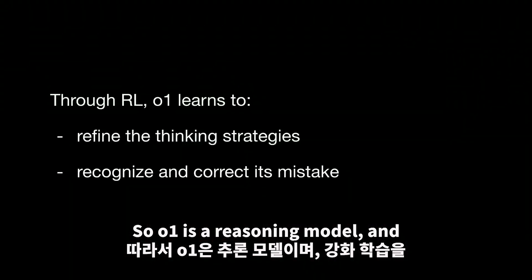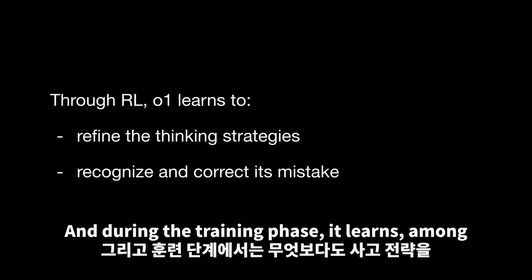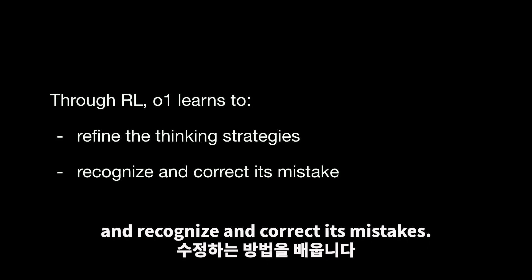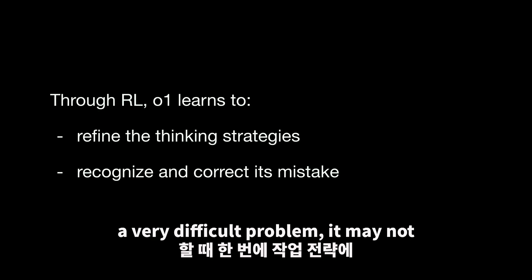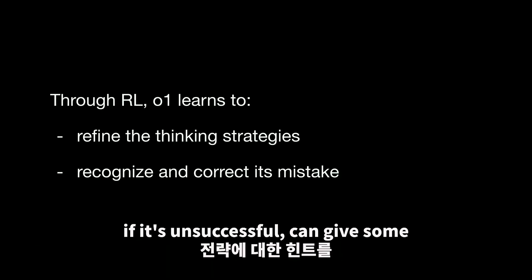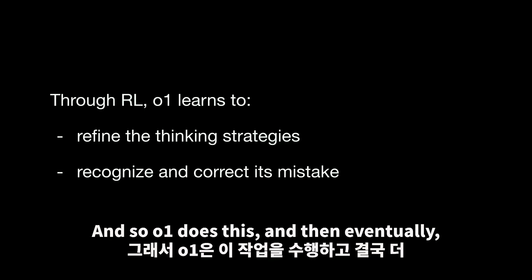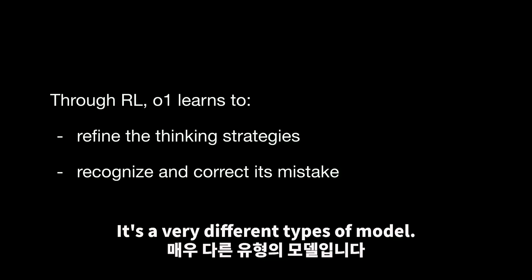O1 is a reasoning model, and we train O1 to think with reinforcement learning. During the training phase, it learns, among other things, to refine the thinking strategies and recognize and correct its mistakes. So when O1 attempts to solve a very difficult problem, it may not get to the working strategy in one go. But just by trying a strategy, even if it's unsuccessful, can give some cues as to what to try next. O1 does this, and then eventually gets to the better strategy. So it's very patient, and it's a very different type of model.